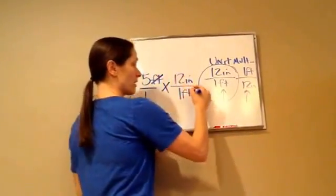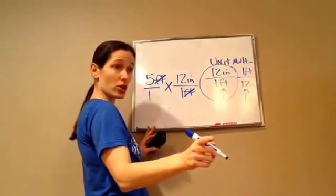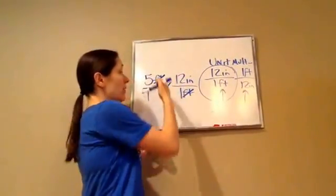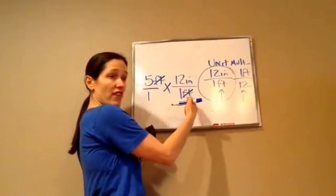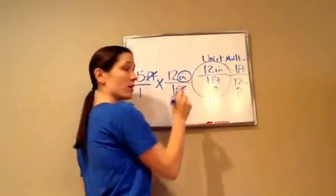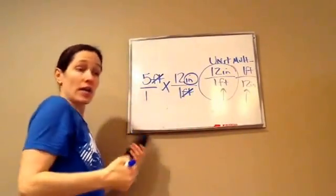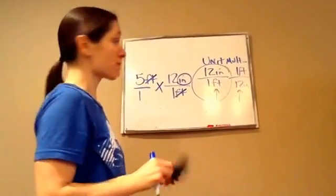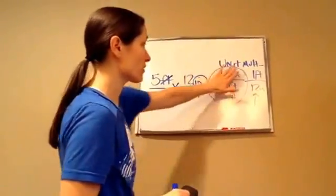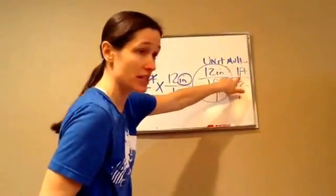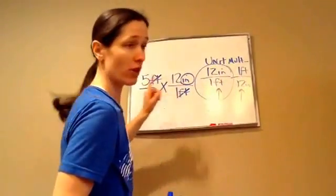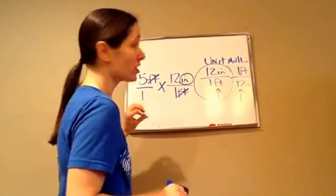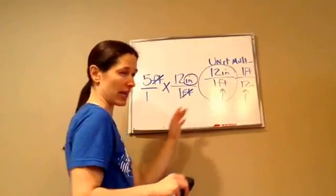Feet and feet cross out, just like the numbers did when we were canceling. When I cross out that feet, what did it still leave? Inches — and that's good because that's what we're wanting. So I've chosen the right unit multiplier. If I had chosen the other one, the feet wouldn't have crossed out, and we need the feet to cross out so that we can get inches.